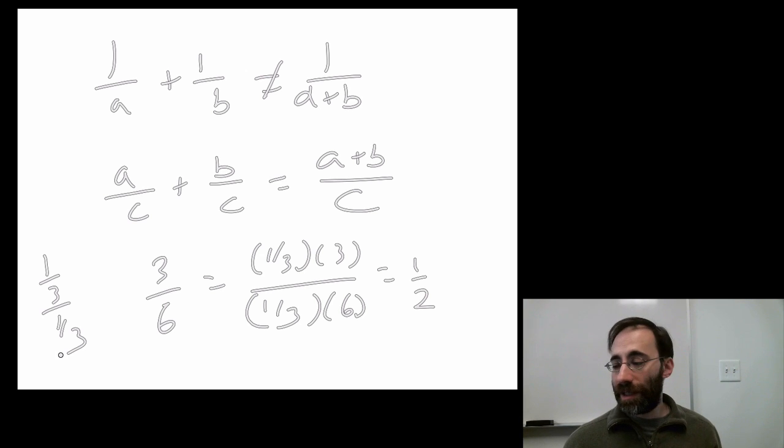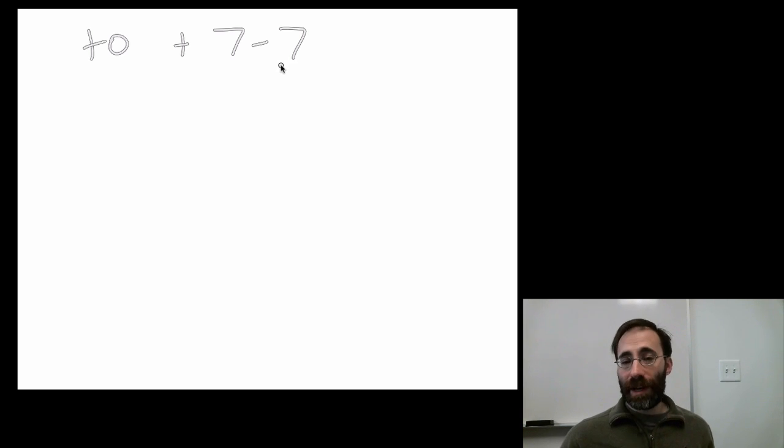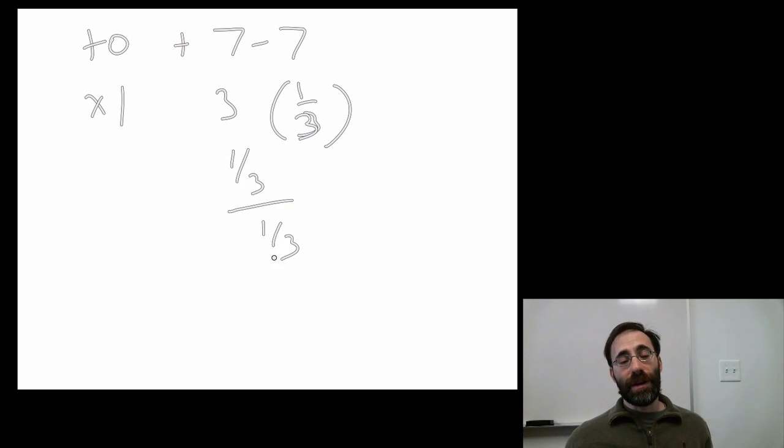So a common trick to use to simplify equations is to multiply or add the identity. I can always add zero and I can always multiply by one. And I can split those zeros and ones up. So, since I can always add zero, I can also always add seven and subtract seven at the same time. That's fine because seven minus seven is zero. Similarly, since I can always multiply by one, I can always multiply by three and multiply by a third at the same time because three times a third is one. Or I can multiply by one-third over one-third because that's one. I can multiply by anything that makes one and subtract and add anything that equals zero. That's usually helpful in simplifying that trick.